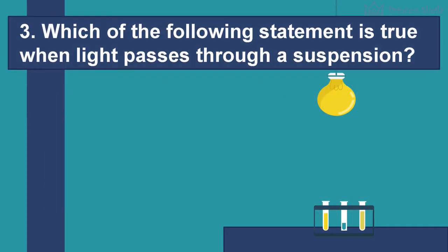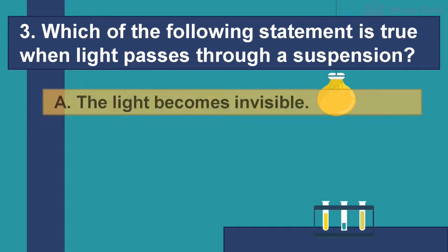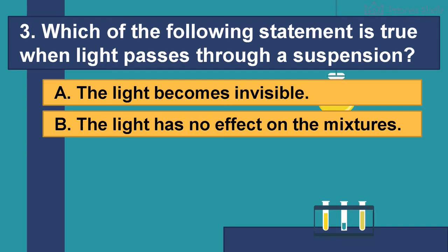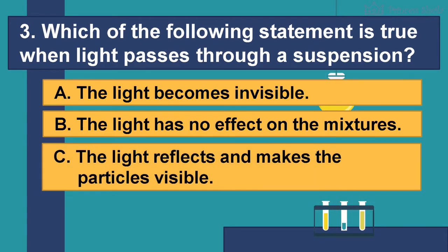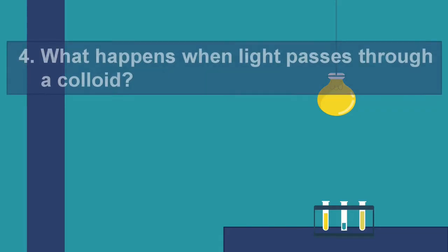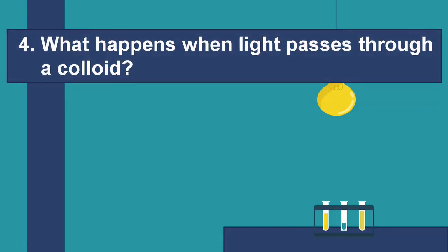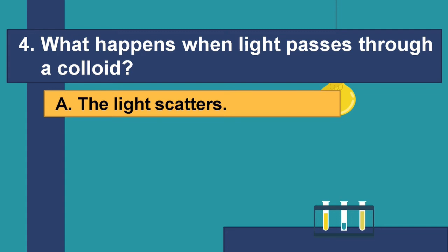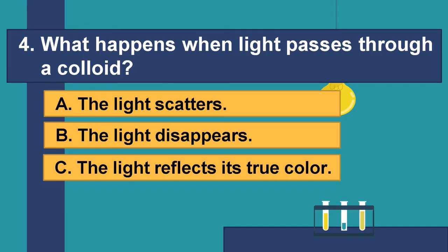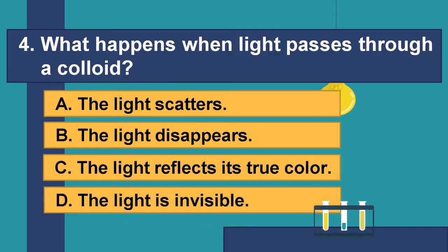Number 3: Which of the following statements is true when light passes through a suspension? A — the light becomes invisible, B — the light has no effect on the mixture, C — the light reflects and makes the particles visible, D — the light bounces back in the particles of the mixture. Number 4: What happens when light passes through a colloid? A — the light scatters, B — the light disappears, C — the light reflects its true color, D — the light is invisible.